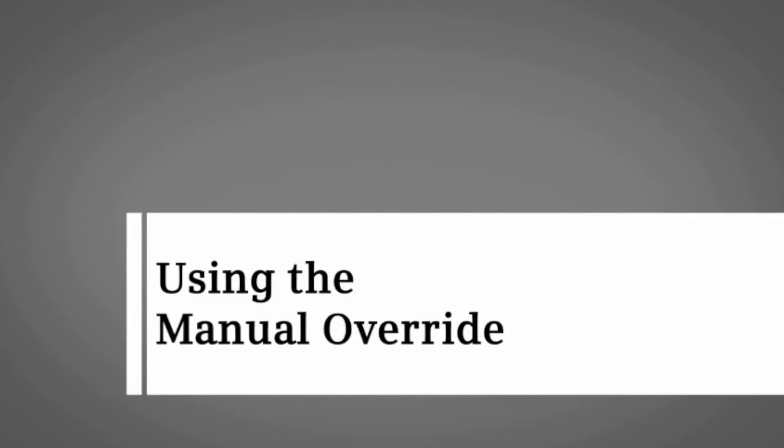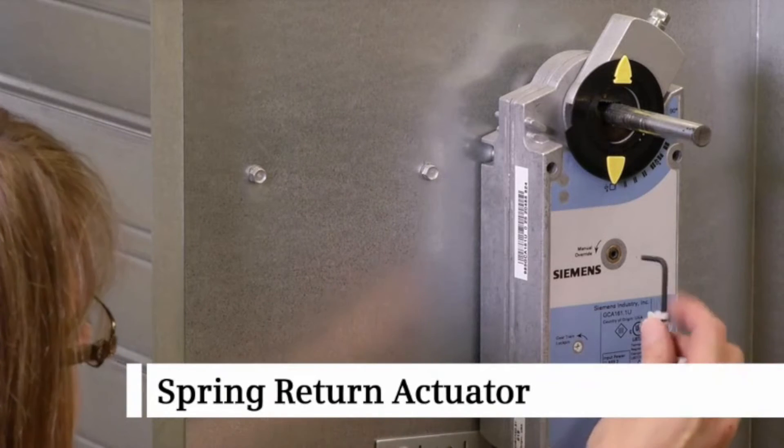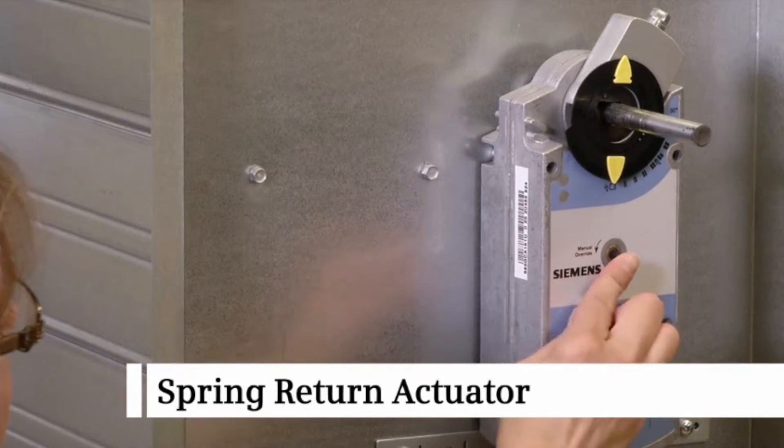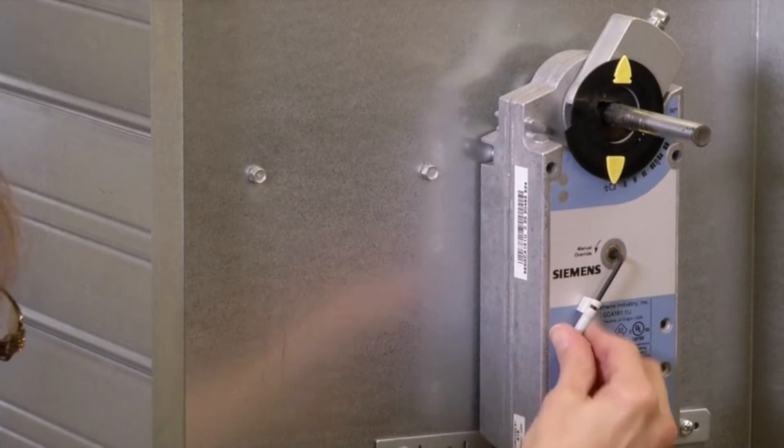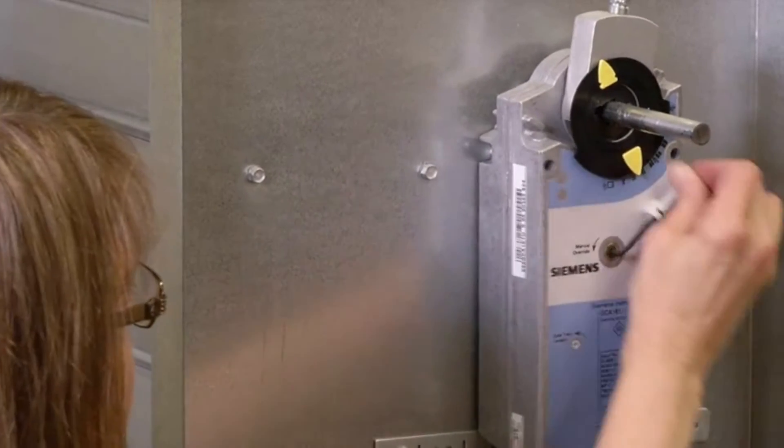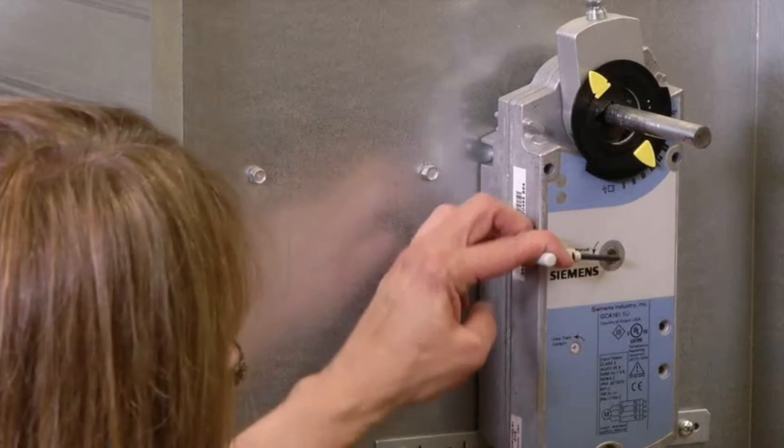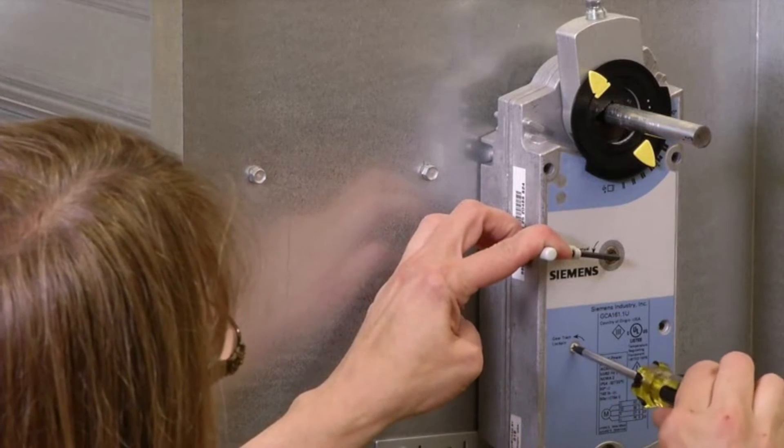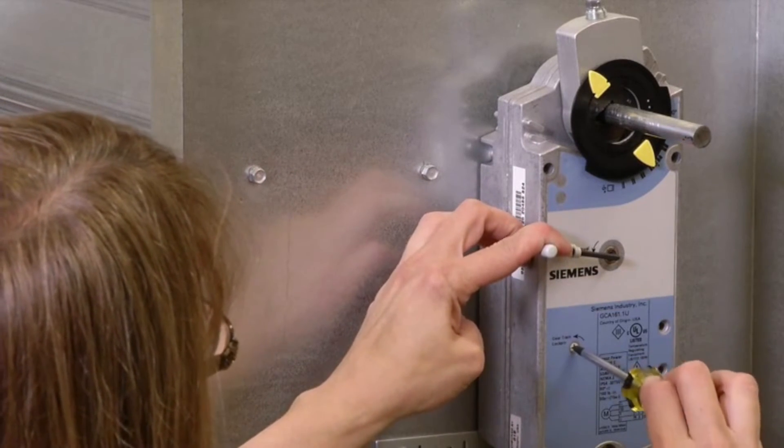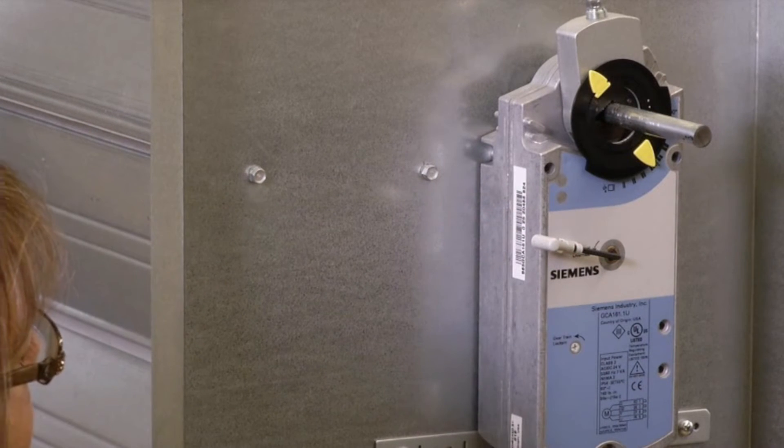Next, let's demonstrate the manual override feature which is used to move the damper in the absence of power. For a spring return actuator, insert the three millimeter hex key into the manual override opening. Turn the key in the direction of the arrow until the damper is in the desired position. While holding the key in place, insert a screwdriver into the gear train lock pin and turn slowly in the same direction as the arrow until you hear a click. The actuator is now held in place.